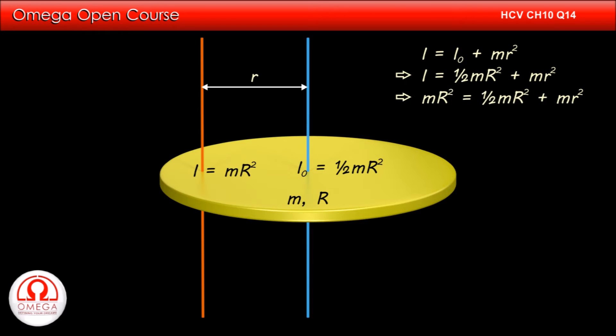Putting the values, we get m into capital R square is equal to half into m into capital R square plus mr square.